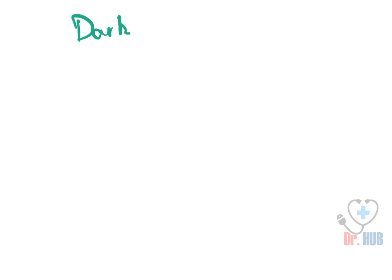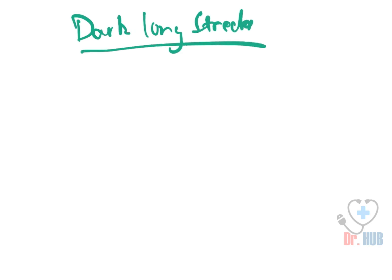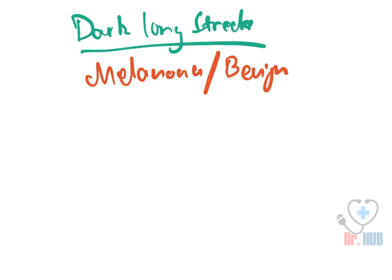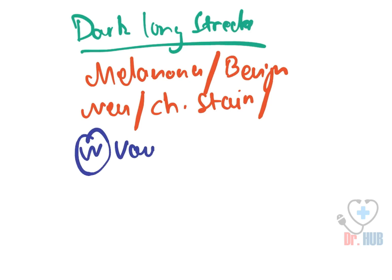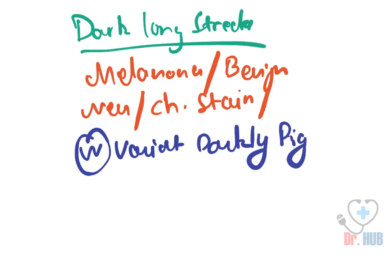Next we look at dark longitudinal streaks. Dark longitudinal streaks indicate melanoma, benign nevus, chemical staining, or a normal variant in darkly pigmented people.